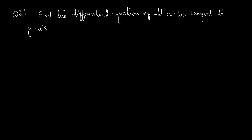Question 27. Find the differential equation of all circles tangent to the y-axis. The general equation of a circle is x² + y² + 2gx + 2hy + d = 0.